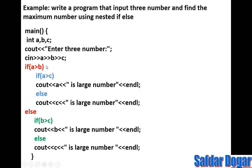Then we say: if A is greater than B, then inside that we check if A is greater than C. If A is greater than C, then A is automatically the largest number. If A is greater than B but A is not greater than C, then we go to else and C is the largest number.